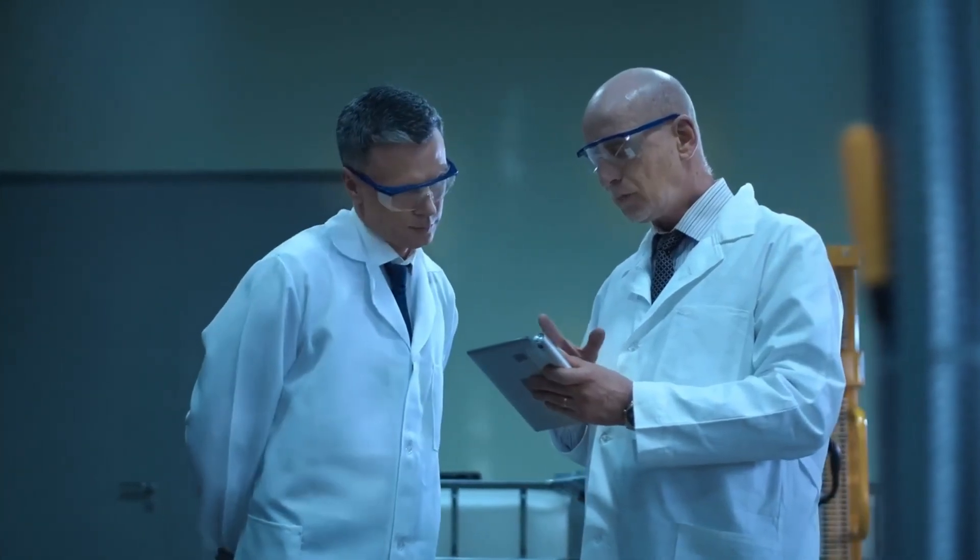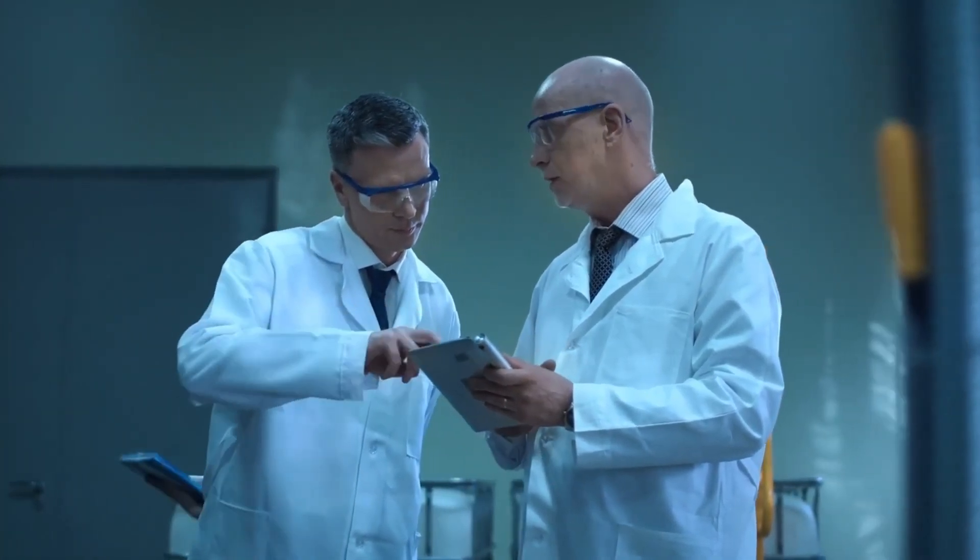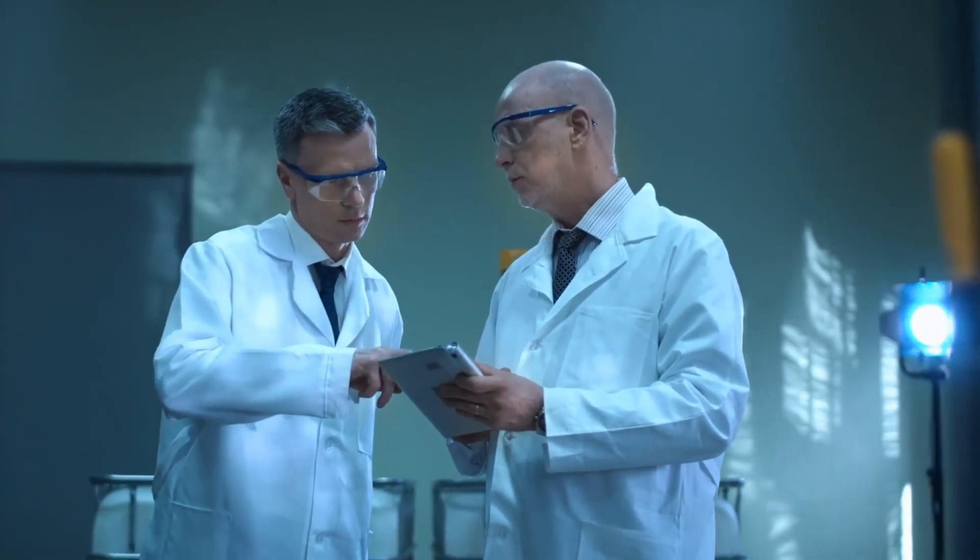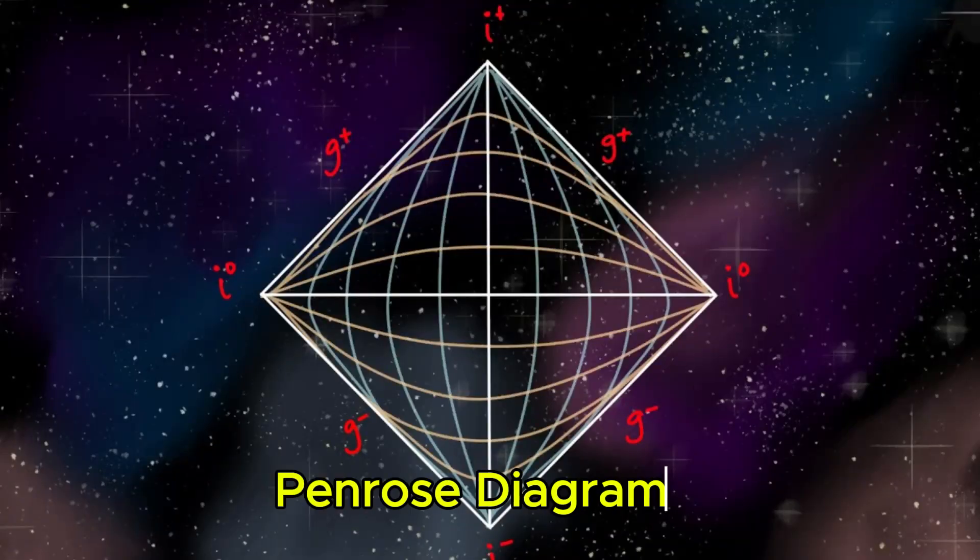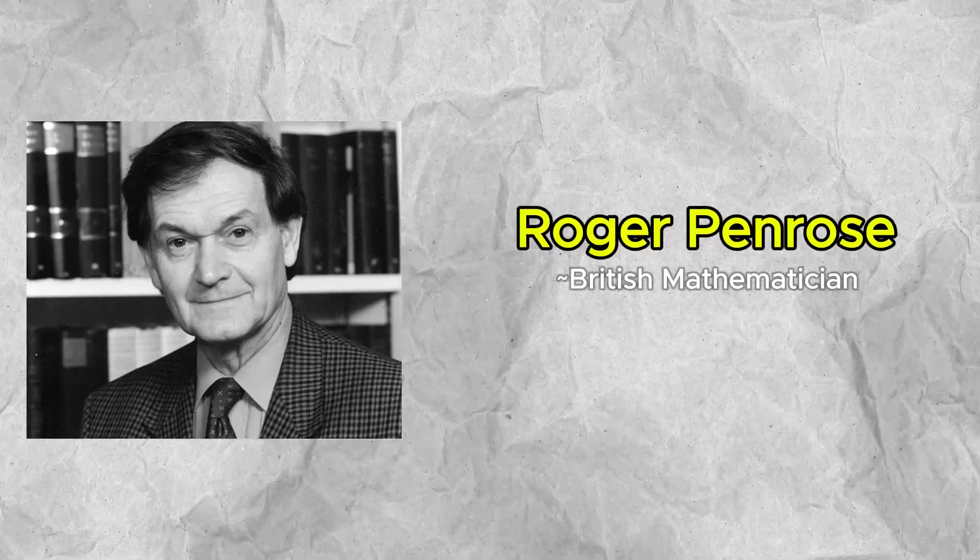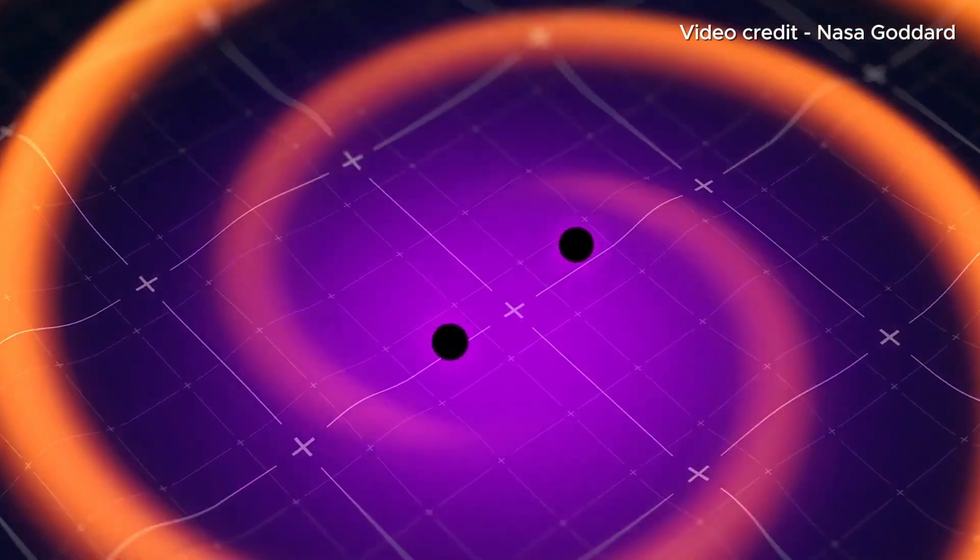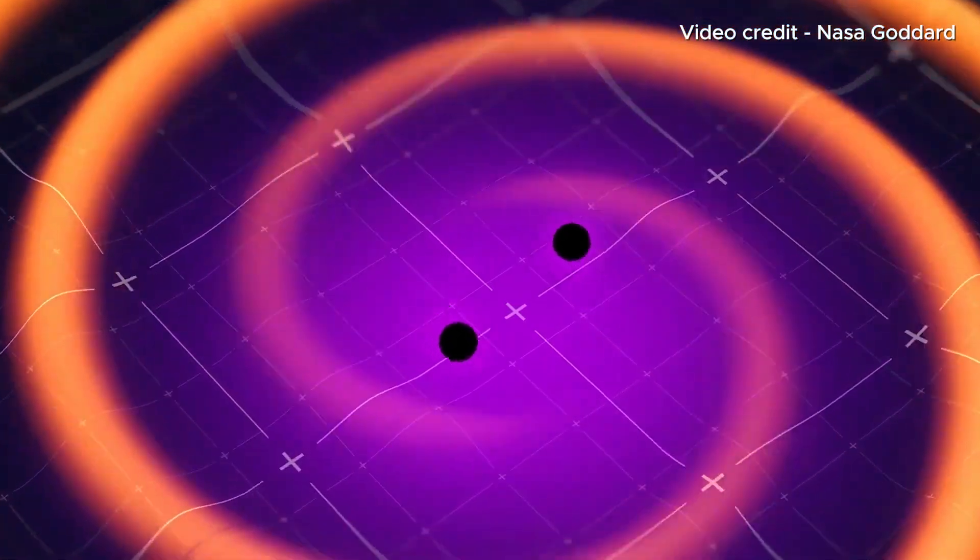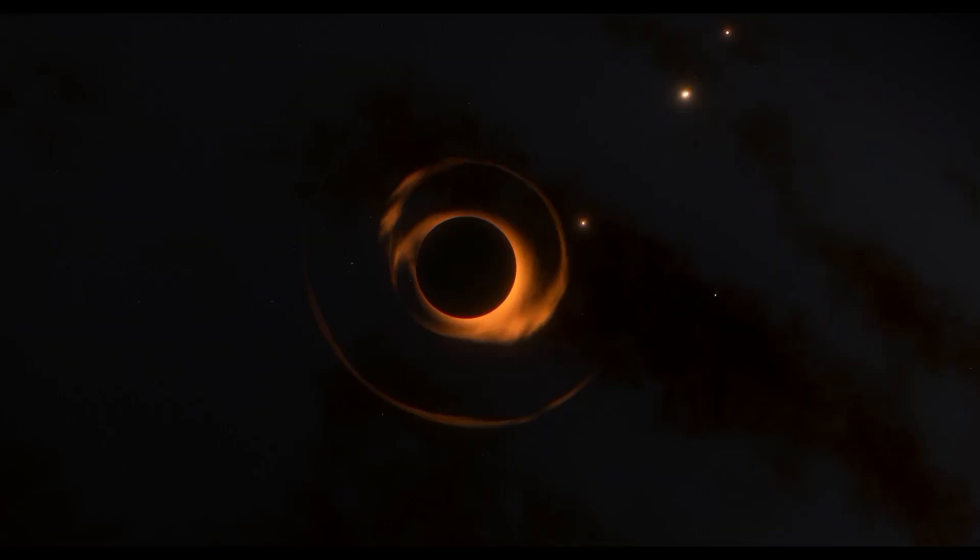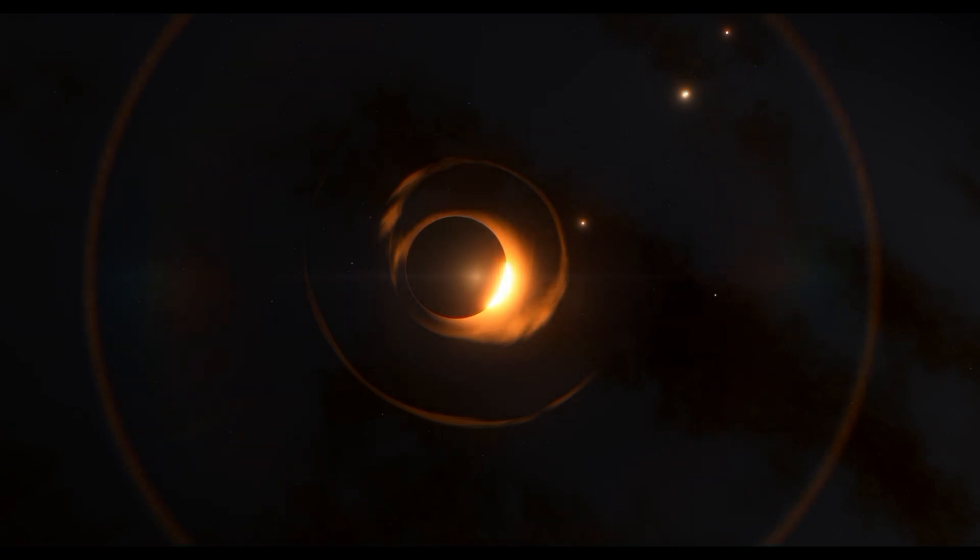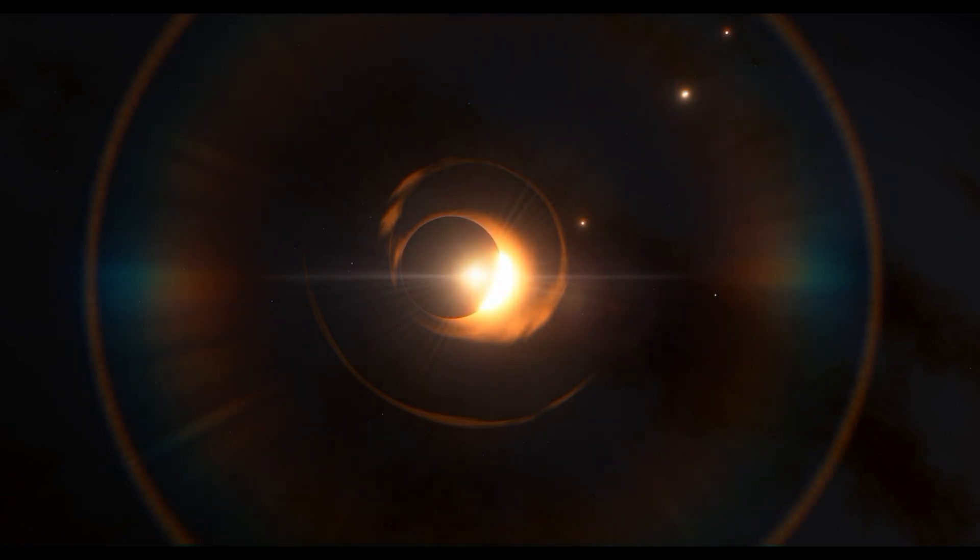But let's pause. Is it even correct to talk about the center of a black hole? When we map a black hole using something called a Penrose diagram, named after Roger Penrose, we see something extraordinary. Space and time become so distorted that their roles essentially swap. The singularity isn't a place in space. It's a moment in time, the end of time.